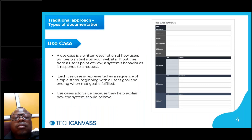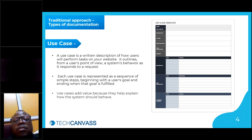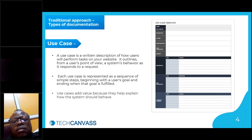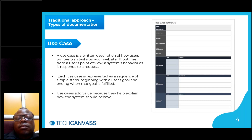In waterfall methodology, requirements are gathered in the form of use cases. A use case is a written description — based on a template — of how the user, from the user's point of view, will perform tasks and how the system will behave. They're represented in the form of sequential steps showing how a typical user goal is fulfilled and how the system is going to respond. A classic example is a login flow — when a user enters their email address and password, how does the system behave? That flow becomes one use case.